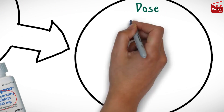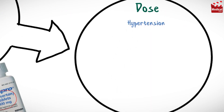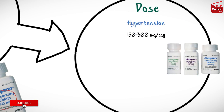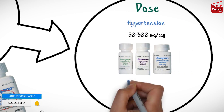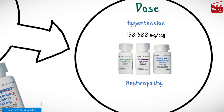The usual dose of irbesartan for hypertension in adults is 150–300mg per day. And for nephropathy, the usual dose is 300mg per day.